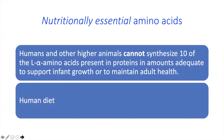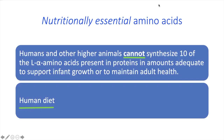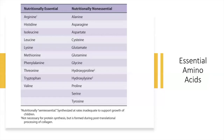Let's begin with the concept of nutritionally essential amino acids. Humans as well as higher animals cannot synthesize 10 amino acids. These amino acids must be provided through the human diet, and this is what we call the essential amino acids. If there is a key concept about amino acids that should come out in a standard exam, it should be: what are the essential amino acids?